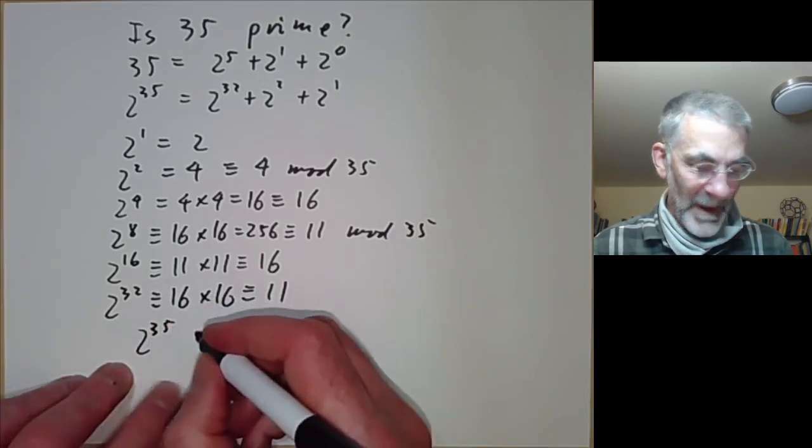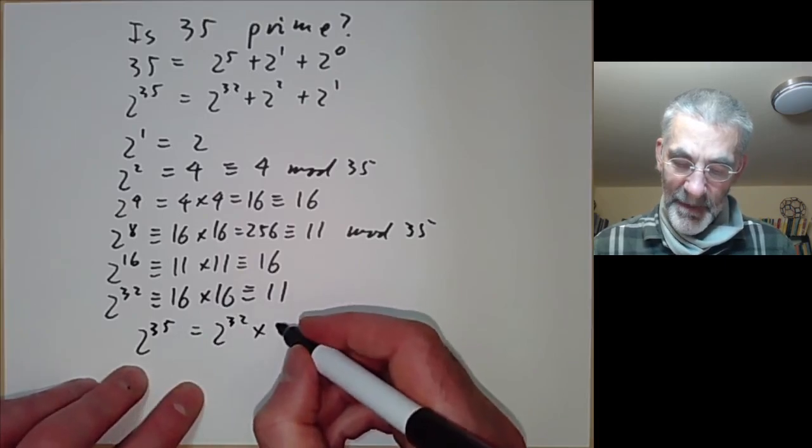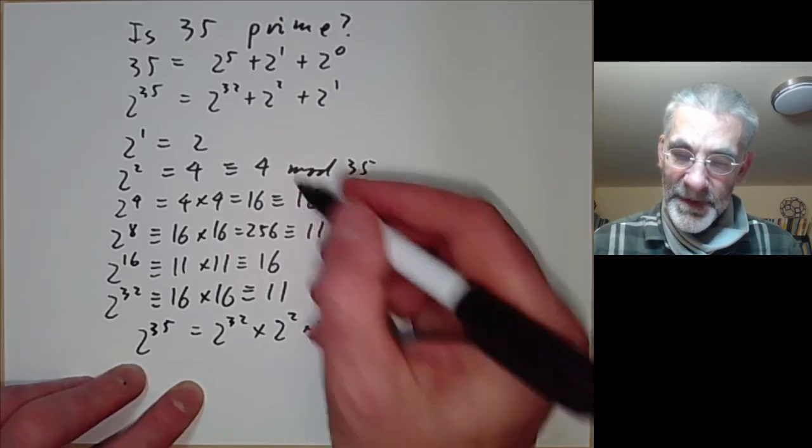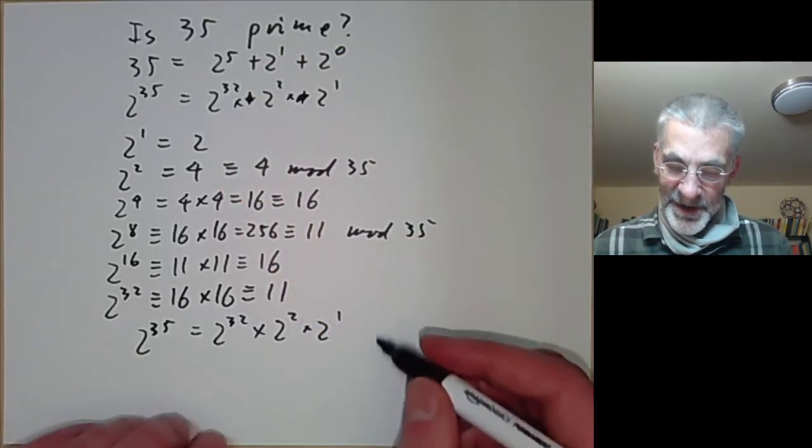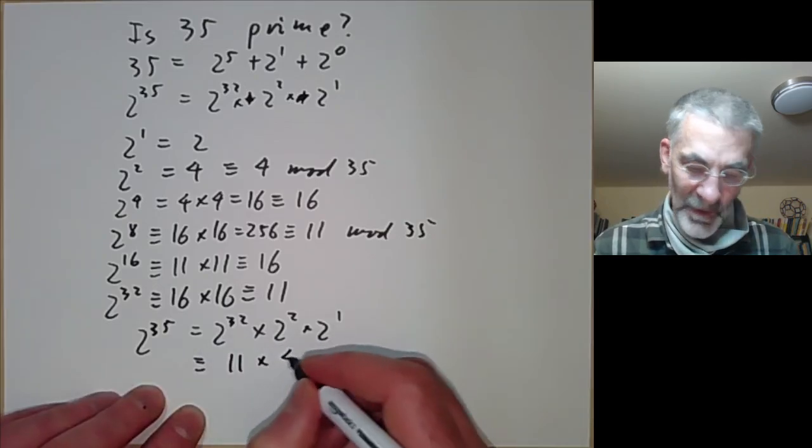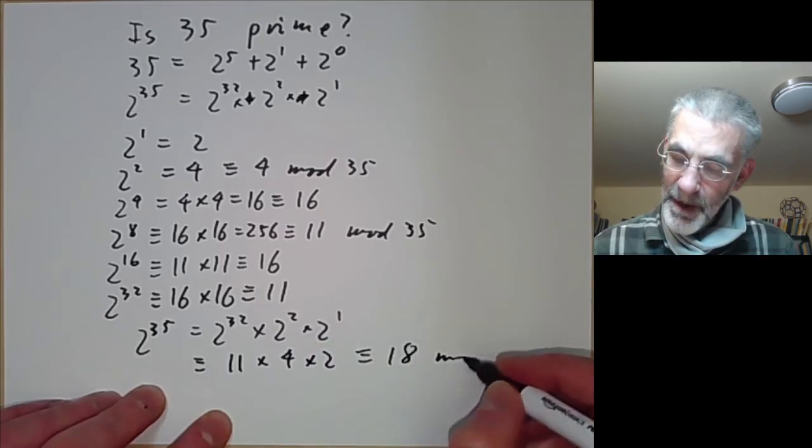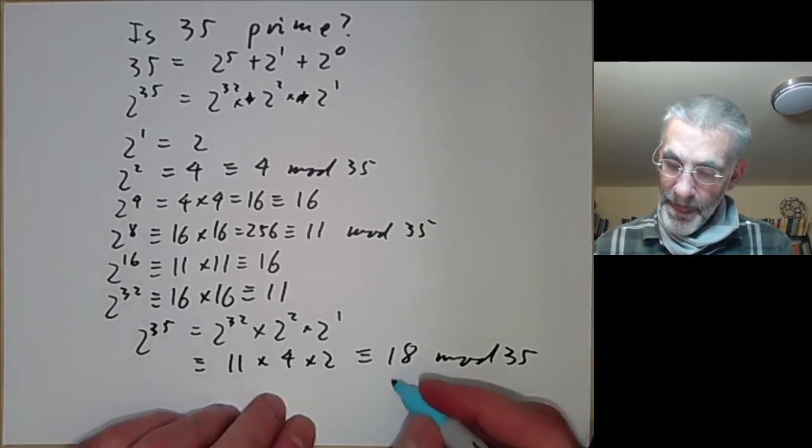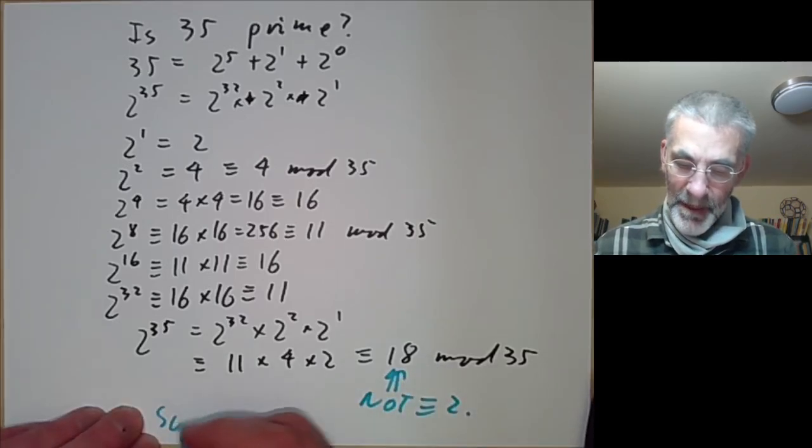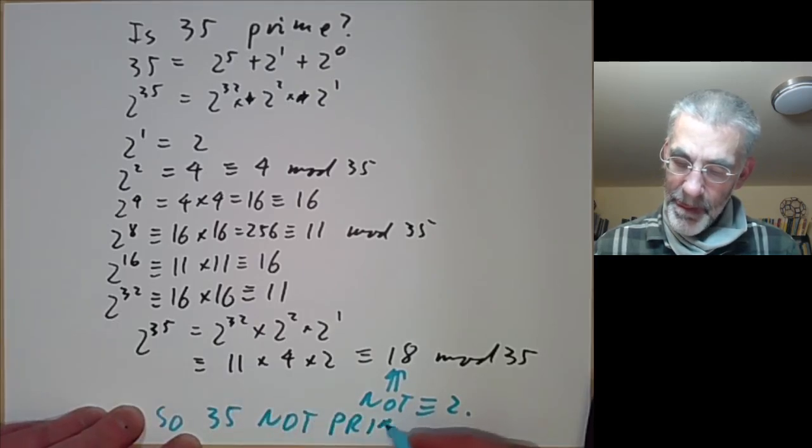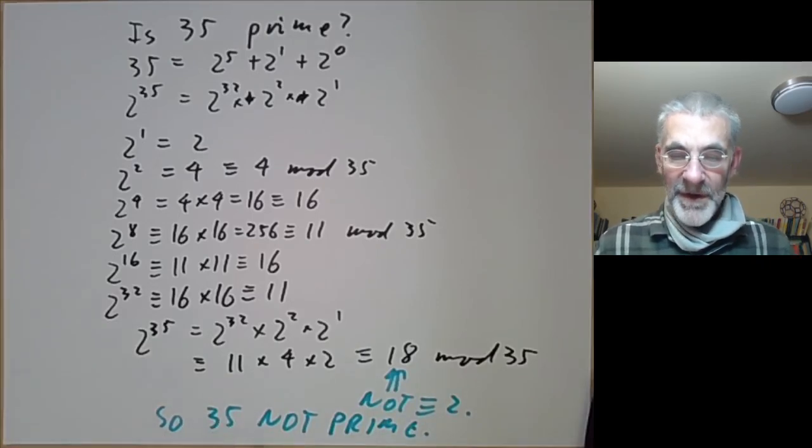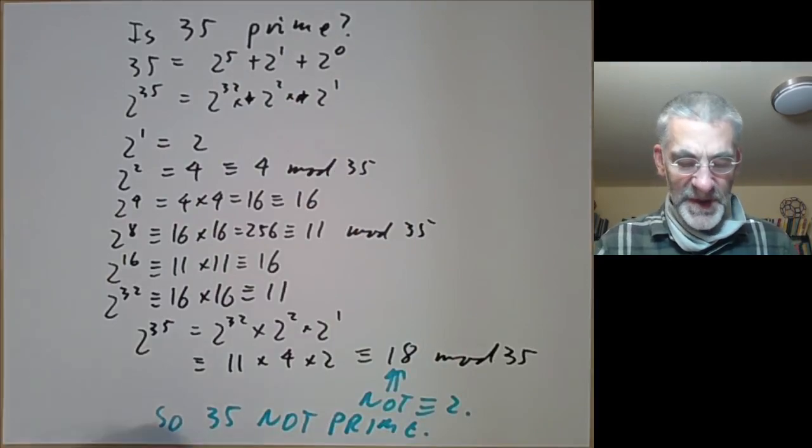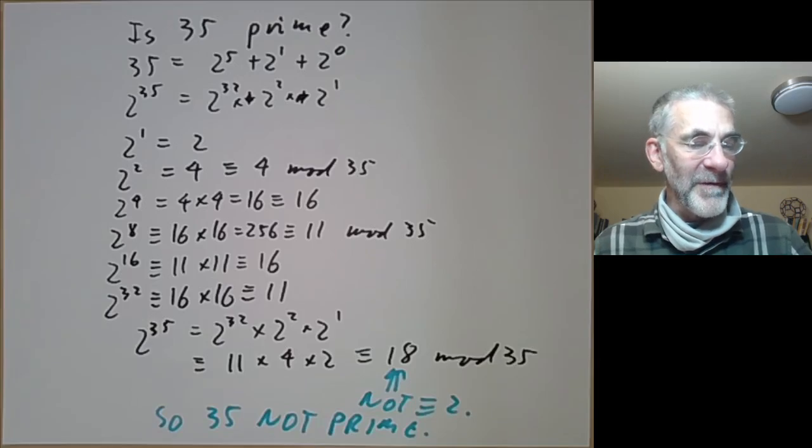And now we work out 2 to the 35, which equals 2 to the 32 times 2 to the 2 times 2 to the 1. And this is equivalent to 11 times 4 times 2, which is equivalent to 18 mod 35. And now you notice that 18 is not equivalent to 2, so 35 is not prime. So we've managed to show that 35 is not prime by a method that's only a few hundred times more complicated than observing that it's divisible by 5. Well, of course, for small numbers this method is really silly, but it really comes into its own for very large numbers.